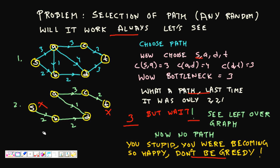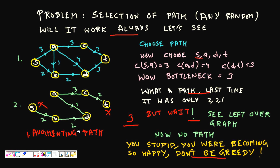To summarize the key definitions: an augmenting path is a path we select from source to destination, such as s → a → d → t. The bottleneck capacity (e.g., 3) is called the augmenting flow. Whatever graph is left after augmentation is the residual graph, and the residual graph has more meaning which we will see next — it is key to making the max flow algorithm correct.